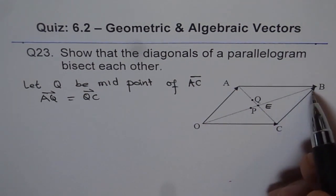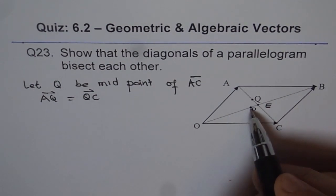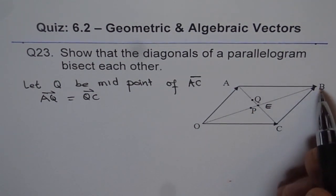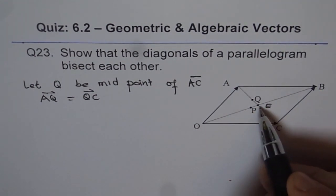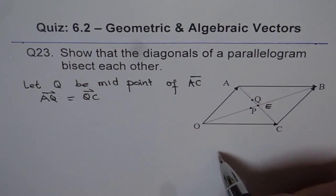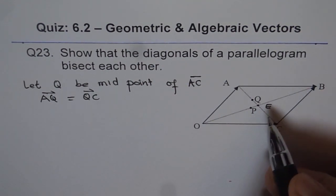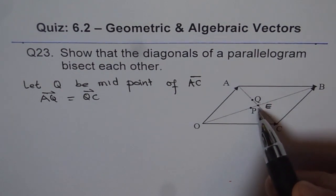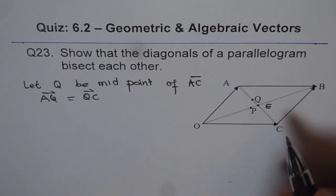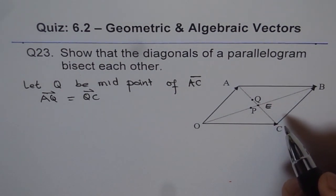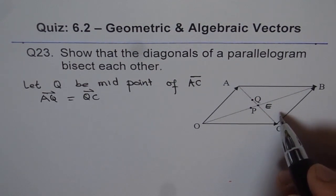Similarly, we will do the same for the other diagonal. We will say let P be the midpoint of OB — not E, which is the point of intersection. Then OP equals PB. So we are starting by saying that the diagonals do not bisect, and then let us see what happens. That is the kind of approach.